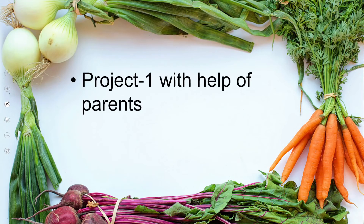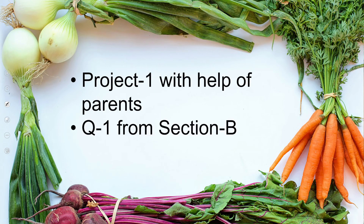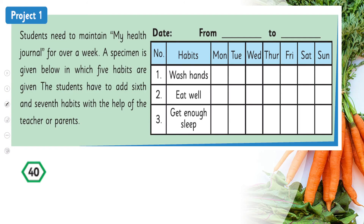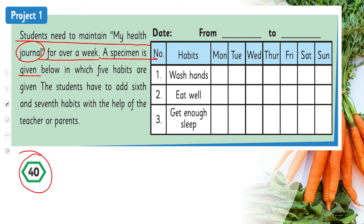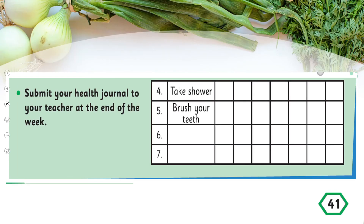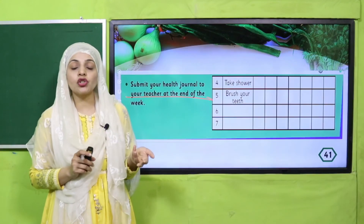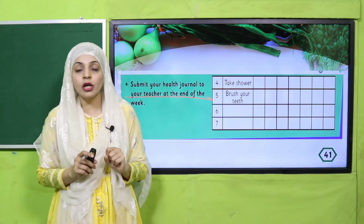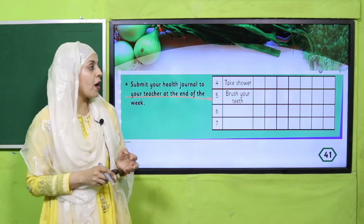Now we will move forward towards your homework. For homework, you will do Project Number One with the help of your parents — Question 1 from Exercise Section B on page 40. Students need to maintain a health journal for over a week. A specimen is given with five habits; students must add a sixth and seventh habit with the help of a teacher or parents. You will write the date you started, and for one week check whether you wash your hands, eat well, sleep well, take a shower, brush your teeth, wash hands before and after meals, and wash hands after using the toilet. Submit your health journal to your teacher at the end of the week.